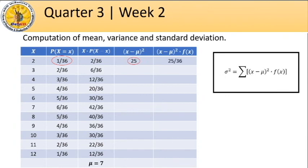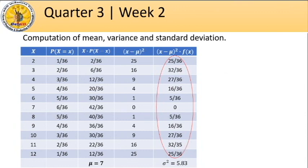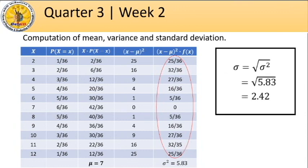We repeat the process down to the last row, and to get the variance, get the summation of all the values in our third column, which is 5.83. Lastly, to solve the standard deviation denoted by sigma, we simply get the square root of the variance, which is square root of 5.83 or 2.42.